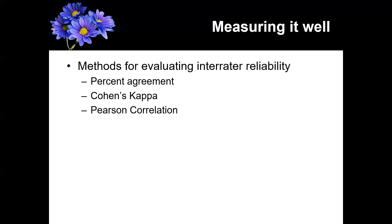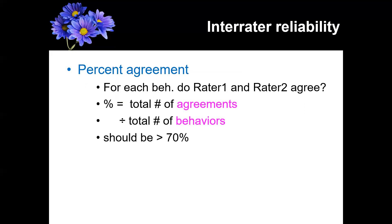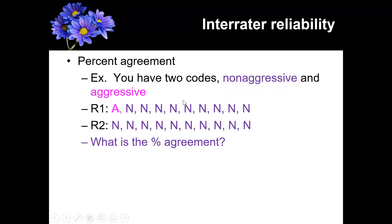There are three different methods: percent agreement, Cohen's kappa, and Pearson correlation. Percent agreement is pretty straightforward but has limitations — it's just the percentage of agreements out of the total number of behaviors. You want to shoot for at least 70 percent. So if you have two codes — aggressive and non-aggressive — and researcher one identifies one aggressive behavior while researcher two marks it as non-aggressive, and all other behaviors are agreed upon, the agreement is 90 percent.